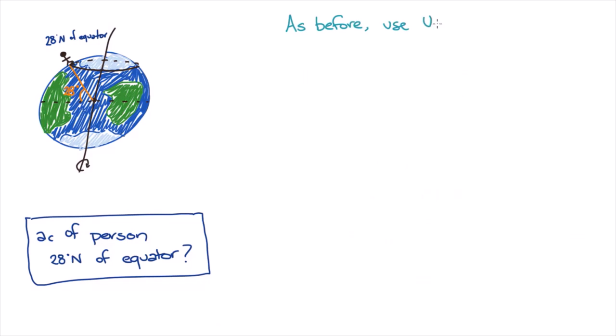The centripetal acceleration and speed are still given by the same equations, and the period will still be 24 hours for the person standing at 28 degrees north of the equator. However, the radius of the path that the person follows will be different.